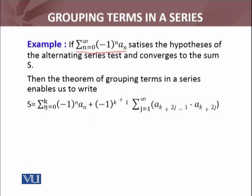We have the sum from n equals 0 to k, which are the grouped terms, plus minus 1 raised to power k plus 1 times a summation, plus minus 1 raised to power k plus 2j minus 1 minus a_{k plus 2j}.